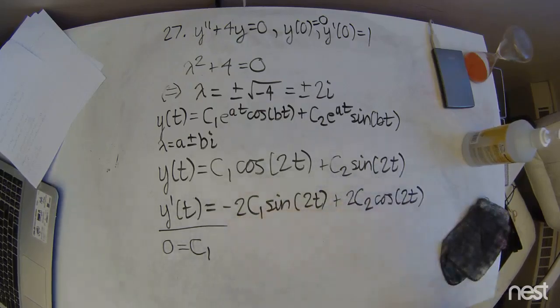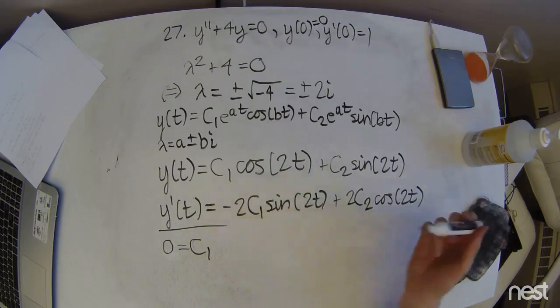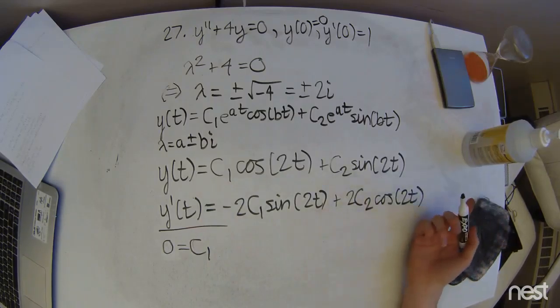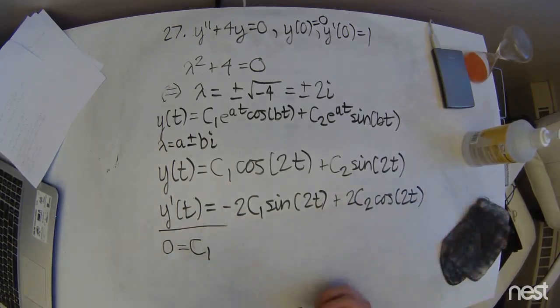And we're going to remember, of course, the cosine of 0 is 1. So that's just going to stay that way. And sine of 0 is 0, so that's going to cancel out the c2. So we're actually done with that part.